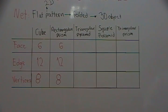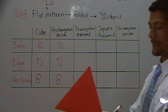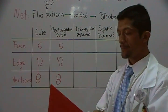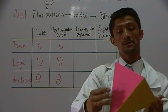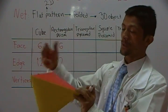Now we have a triangular pyramid. A triangular pyramid is made of four faces. You can see them here. One, two, three, and four.